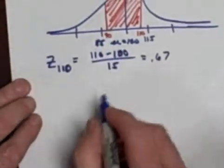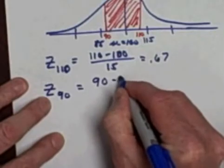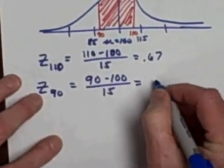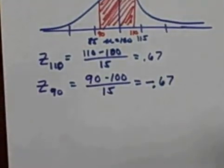My z-score for my boundary on the left for 90 is going to be 90 minus 100, the mean, divided by the standard deviation and that's going to be negative 0.67 or negative two-thirds.